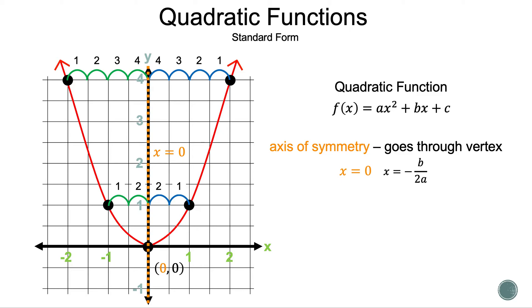What do we think is one key bit of information that we haven't talked about yet? That's correct — the vertex. The vertex can be a minimum or maximum point, and in this case we have a minimum at 0, 0.